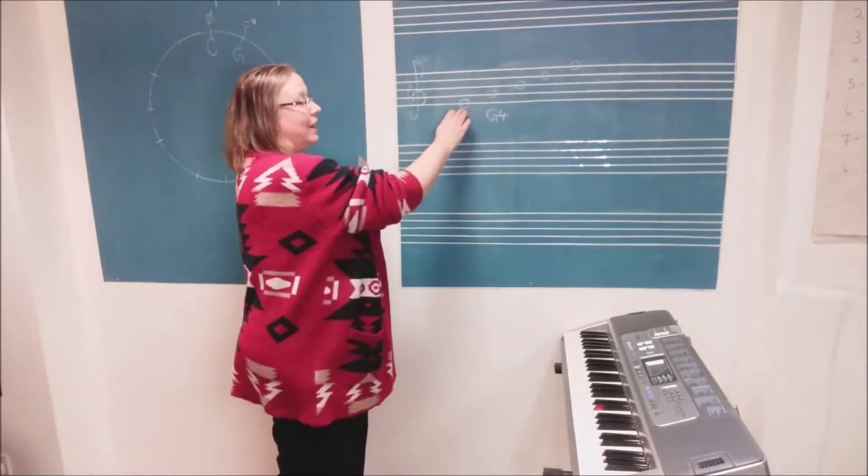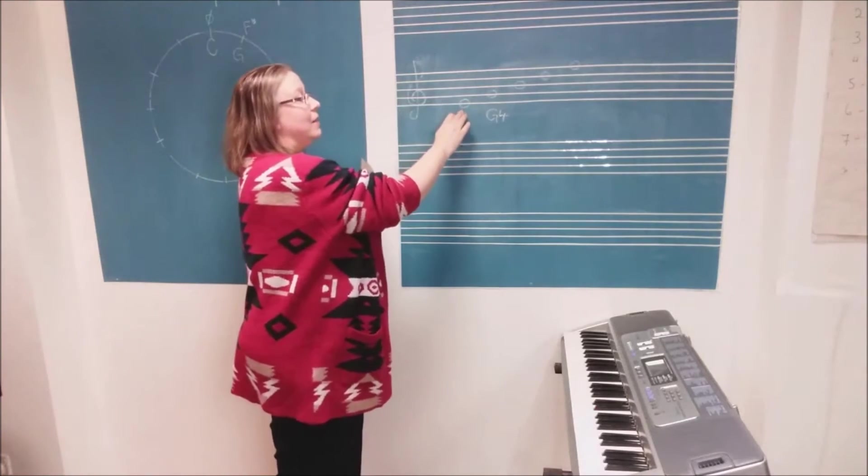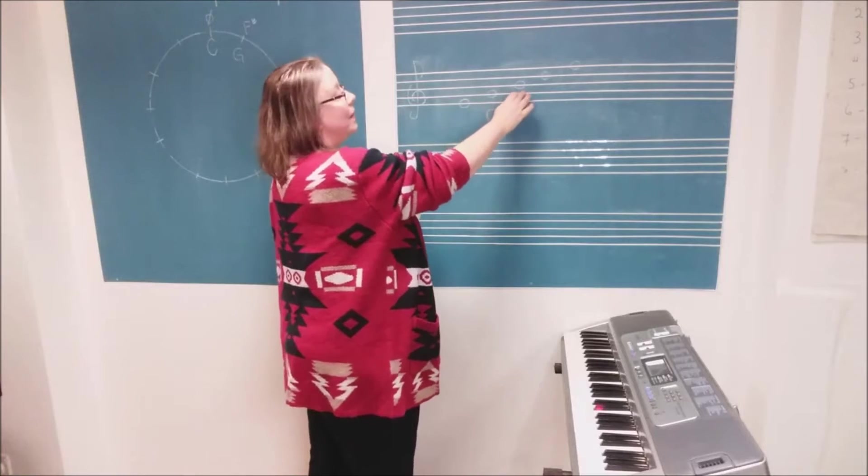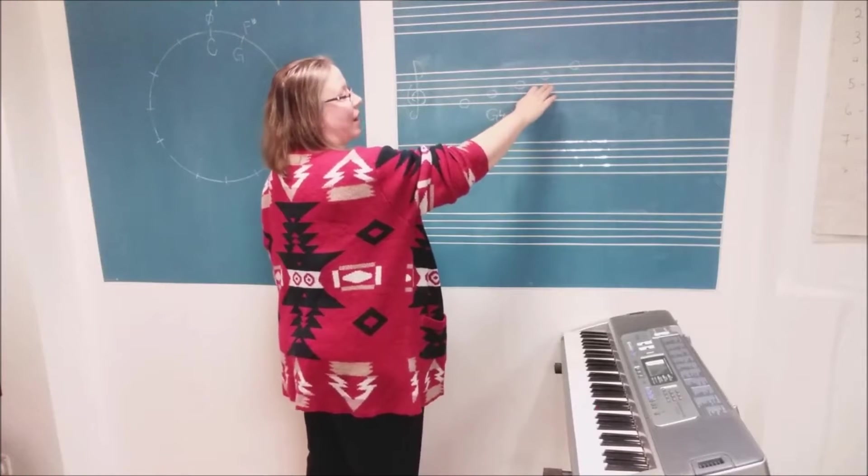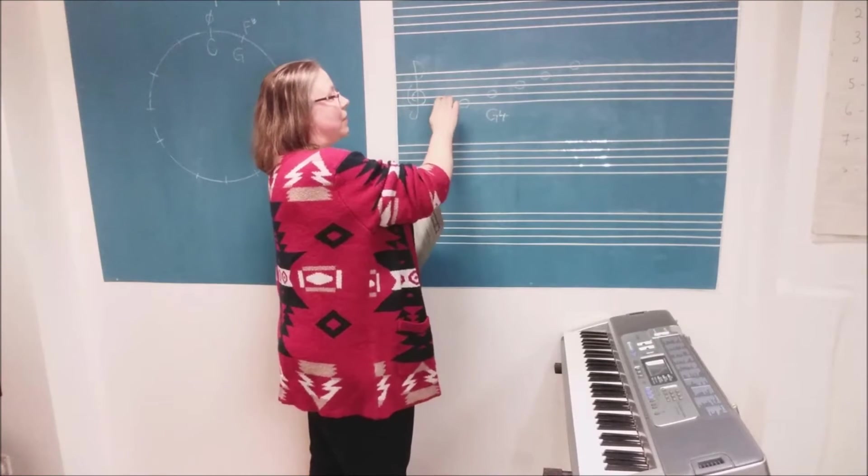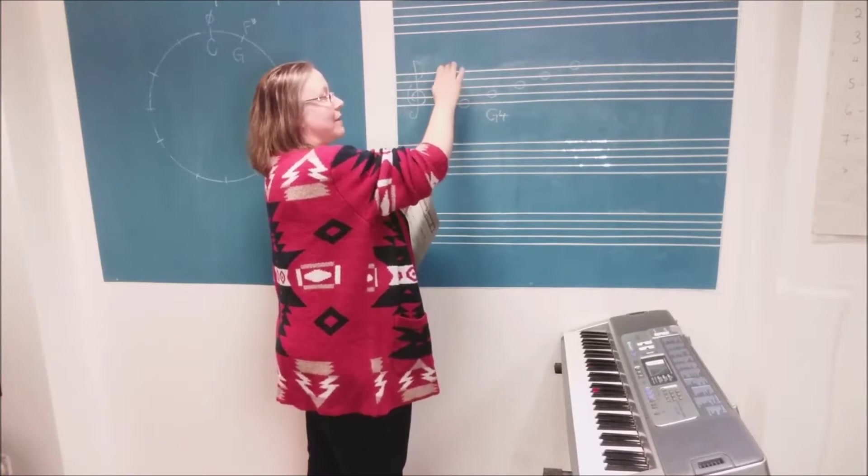The rhyme that I use a lot is: E for every, G is green, B is bus, D is drives, and F is fast. Every green bus drives fast.